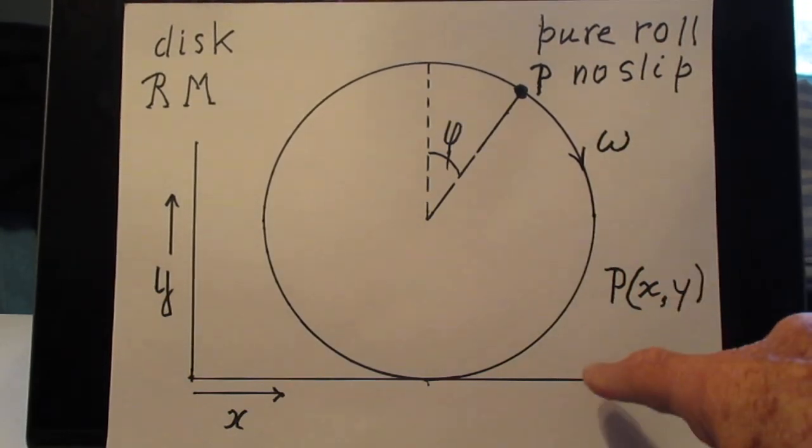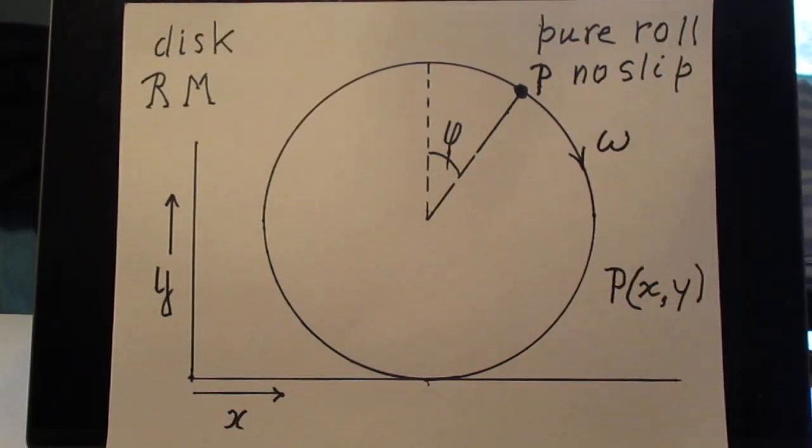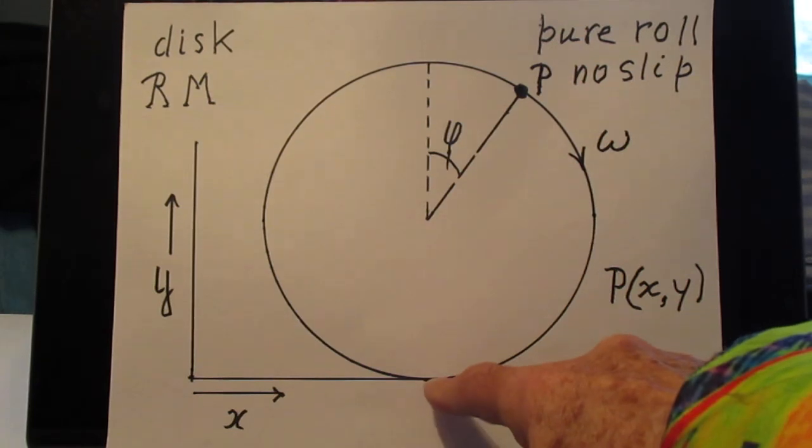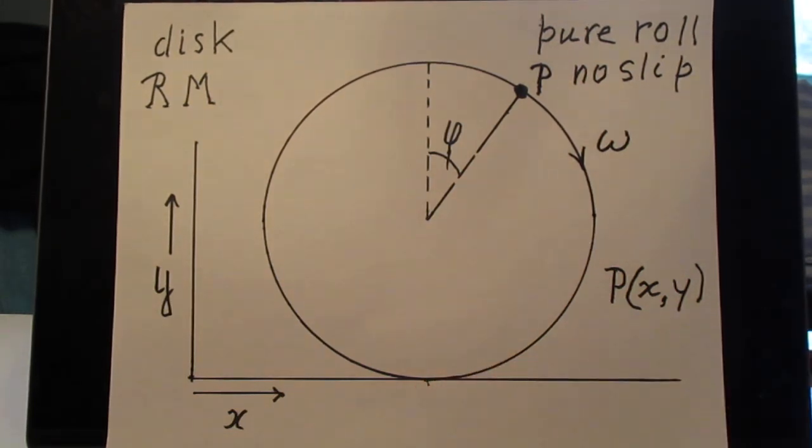Of course there is friction here with this horizontal surface. But there is no slip here. That means the friction will never do any work and so there will be no heat produced. Is this artificial? Not at all. Your bicycle wheels are probably always very closely in pure roll condition.